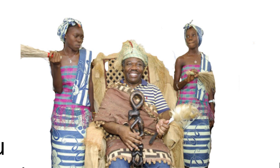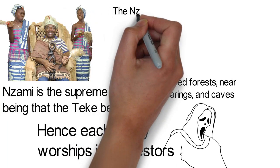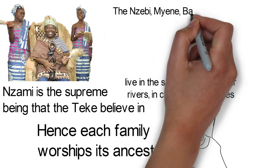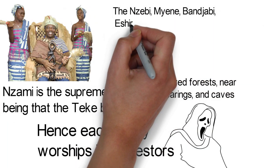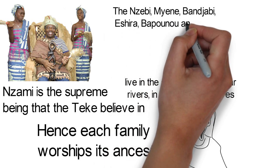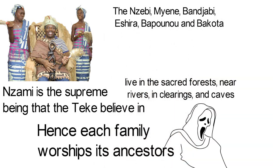Ali Bongo Ondimba, current president of Gabon, is from the Teke ethnic group. The Nzebe, Meyene, Banjabi, Eshira, Bapunu, and Bakota are some of the other ethnic groups in Gabon.